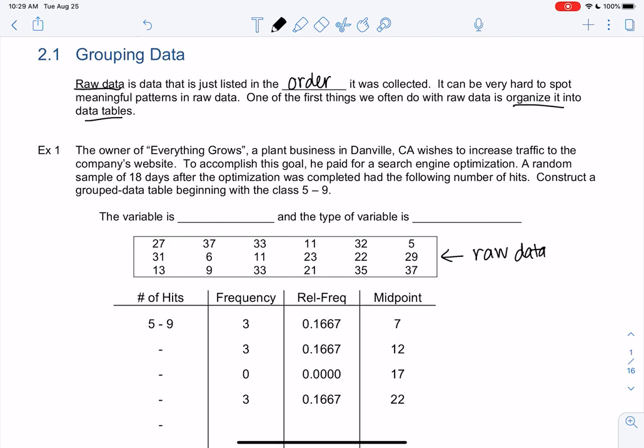We're looking at the owner of Everything Grows, a plant business in Danville. They want to increase traffic on the website. So they pay for a search engine optimization. This will make them pop up better on a search engine like Google. They randomly sample 18 days after the optimization was completed and had the following number of hits. We're going to make a grouped data table.